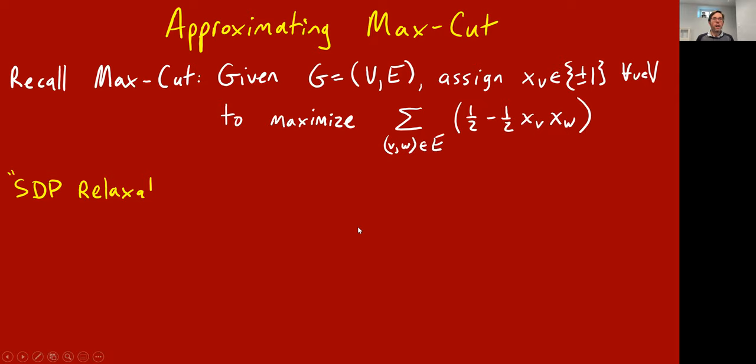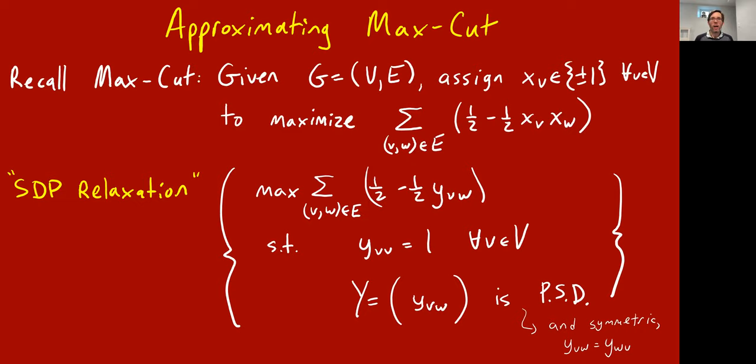Last time we developed what was called a semi-definite programming relaxation for this problem. In a semi-definite program, we're going to have n² variables, one for each pair of vertices, and we call these little y sub vw. We think of them as being arranged into a matrix. The idea is that yvw is supposed to stand for the product of xv and xw.